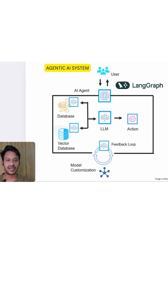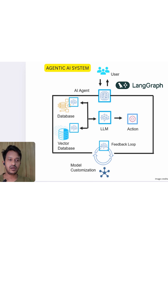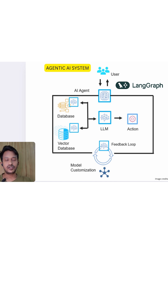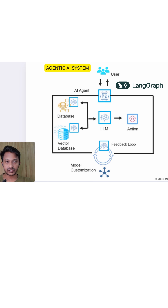What makes an AI system agentic? It basically perceives information — it will know what the user intent is when a query comes in. Since there is an LLM involved, it can think step-by-step, and it acts using tools. There are tools connected; it can do tool calling and API calling whenever required.